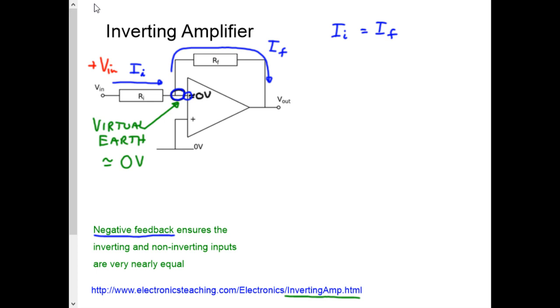Right, let's do some resistor equation work. So the potential difference across this resistor is V in to zero, and therefore, for the input current, I equals V in, which is positive, over Ri.